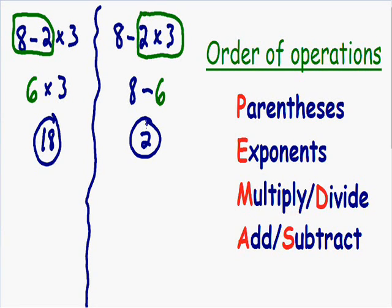So let's take a look at what just happened. We worked out the same exact problem two times, except we got two separate answers. This is not okay in the world of mathematics. One of the nice things about a mathematical expression like this is that there is only one correct answer — this is not open for interpretation.